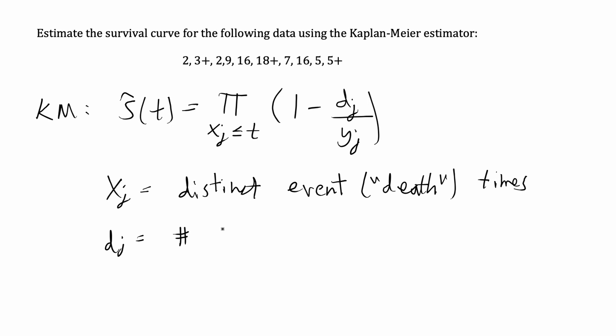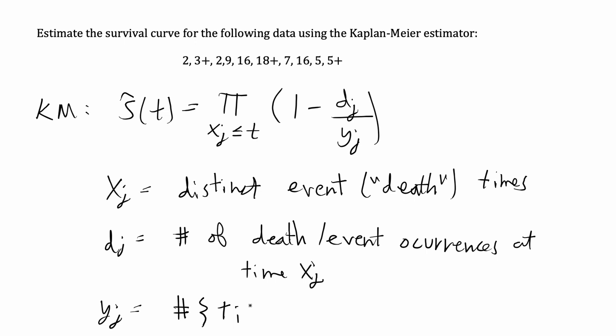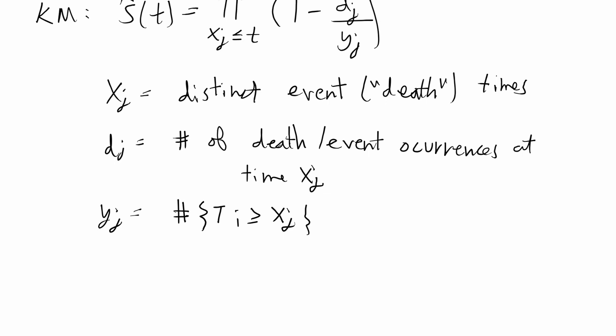yj is equal to follow-up times that are at least as big as xj. Basically at time xj, how many observations in your sample have survived at least up to that time or past that time? Ti is the follow-up time and the follow-up time has to be greater than or equal to xj. Now let's go ahead and get into estimating the survival function.